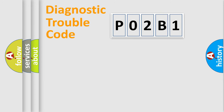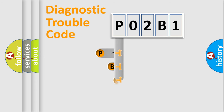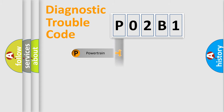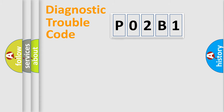Let's look at the history of diagnostic fault code composition according to the OBD2 protocol, which is unified for all automakers since 2000. We divide the electric system of the automobile into four basic units: Powertrain, Body, Chassis, and Network. This distribution is defined in the first character of the code.